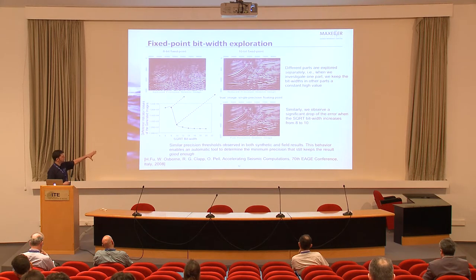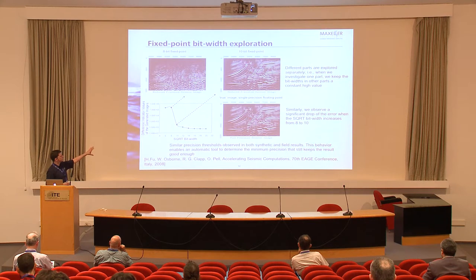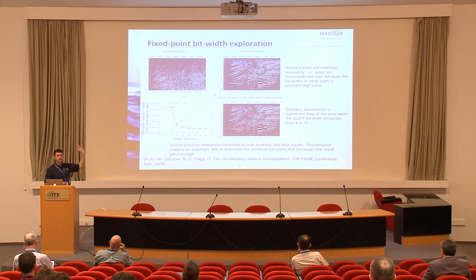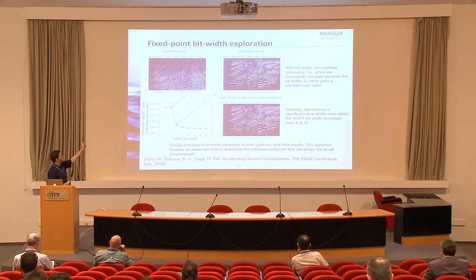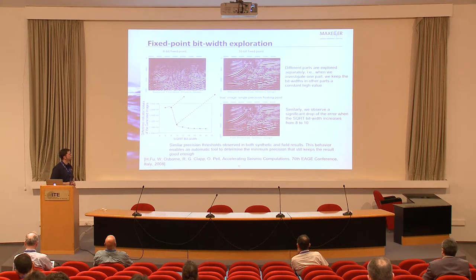Here's an example from oil and gas exploration — you get this underground structure image, and what matters is whether the image conveys meaning. It turns out that going from floating point to fixed point produces bit errors, but it's the same image with the same meaning. However, a lower precision version doesn't convey the same meaning. By understanding what you need at the output, you can work backwards — in this case, 10-bit fixed point is enough; 8-bit is not.